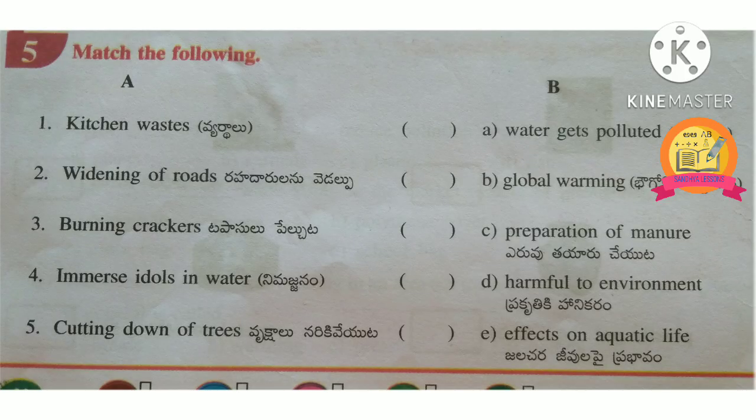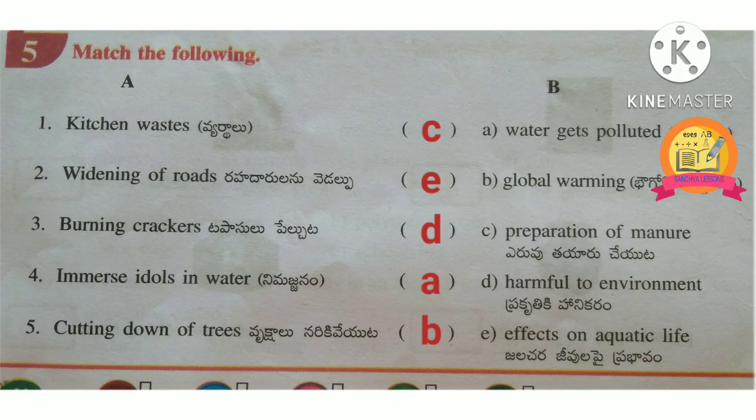Fifth Roman — match the following. Kitchen wastes — preparation of manure. Burning crackers — harmful to environment. Immerse idols in water — water gets polluted. Cutting down of trees — global warming.